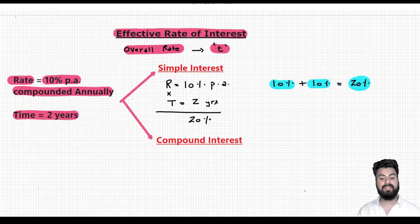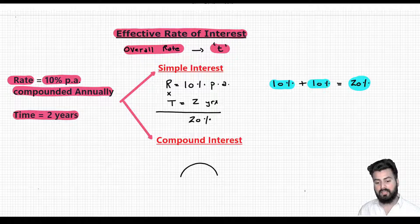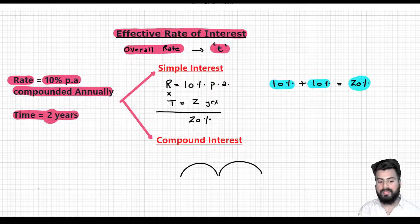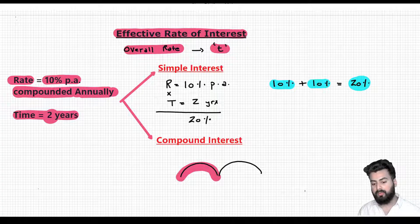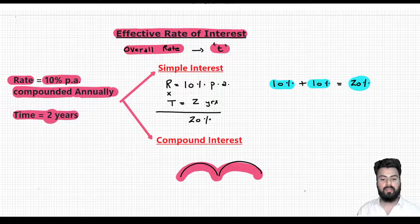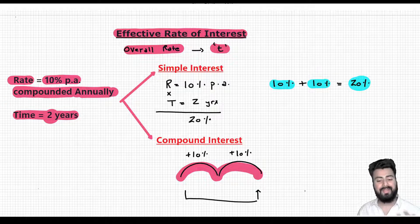Now let us understand the same calculation in case of compound interest. As I mentioned in the last lecture, compound interest is an application of successive percentage change. So for the calculation of effective rate of interest, I have to look at these two changes successively. Since the number of years are two and we are updating the principal — compounded means update the principal — we are doing the interest calculation at the end of every year. So the number of compounding periods are going to be 2, and for each compounding period the rate of interest would be 10% per annum. So just write down 10% for the two successive cycles. I have the values of two changes.